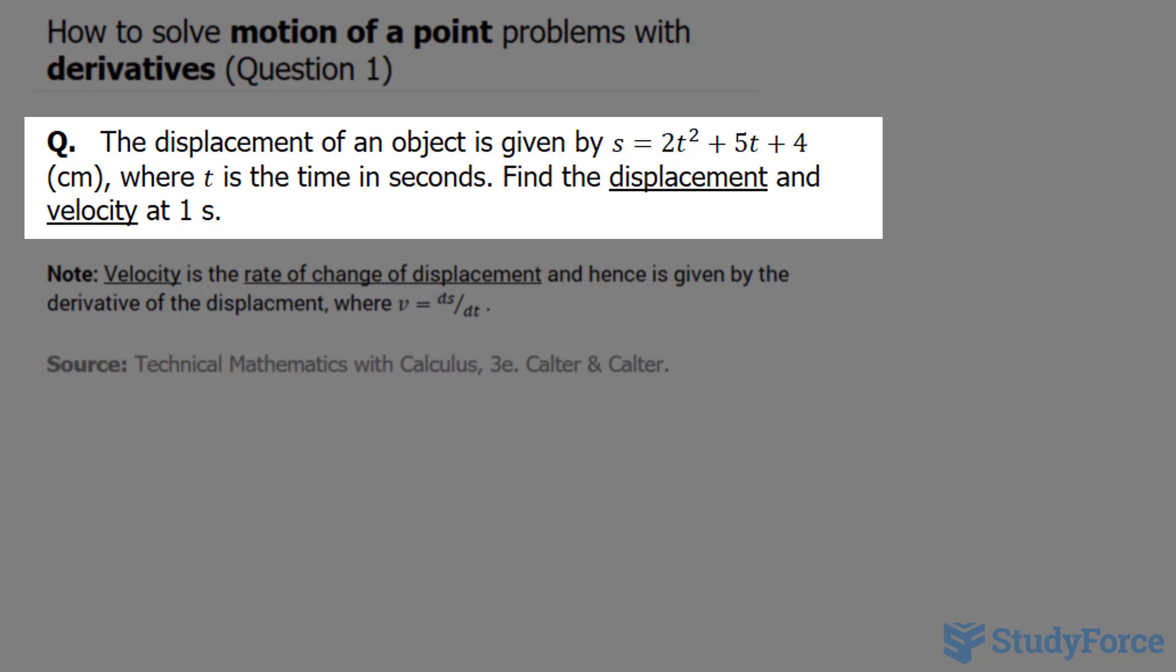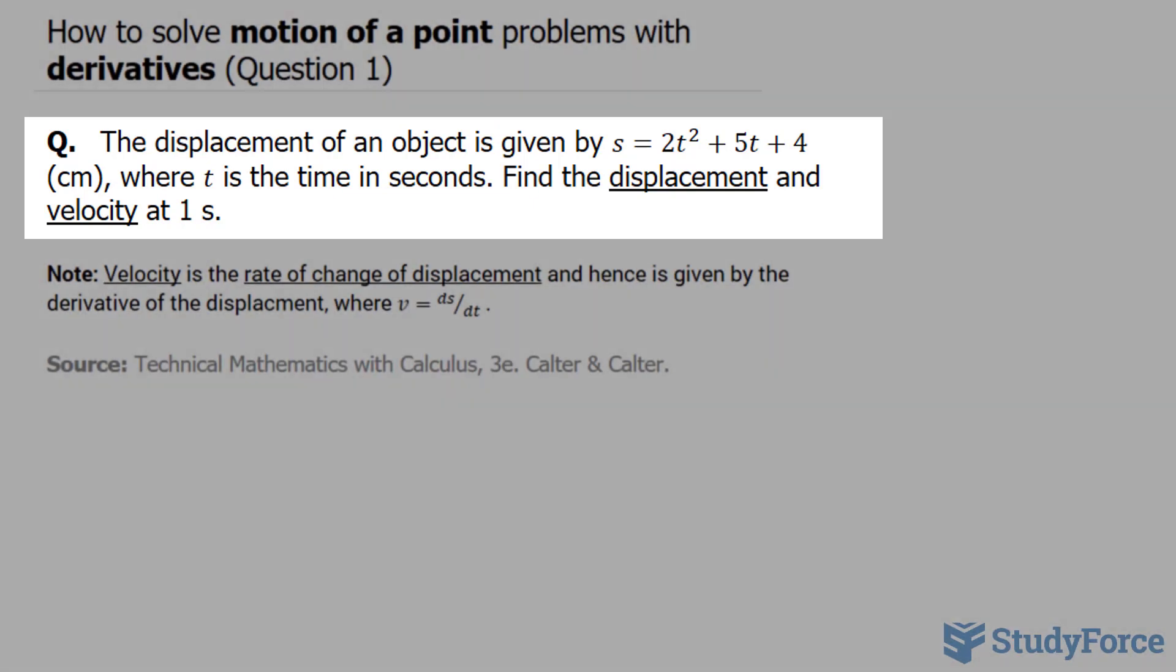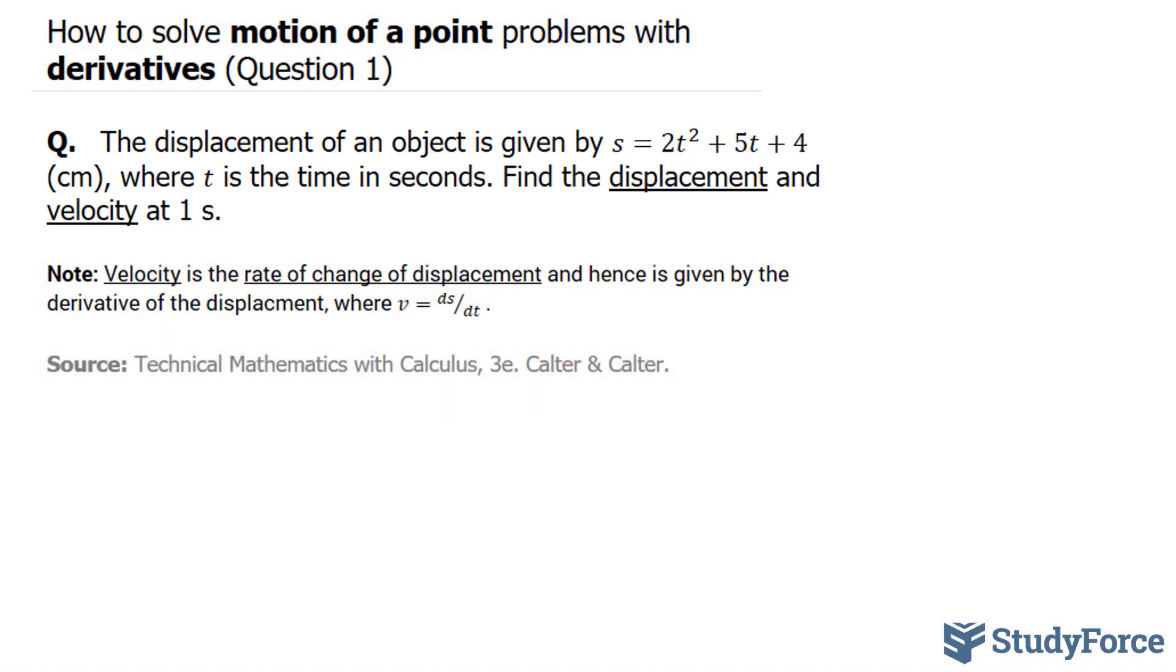Find the displacement and the velocity at one second. The first thing we can do is find the displacement by replacing 1 into these t's. That will tell us how much this object has moved after one second.